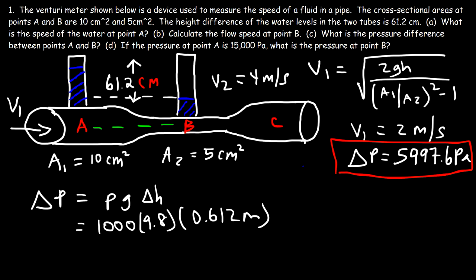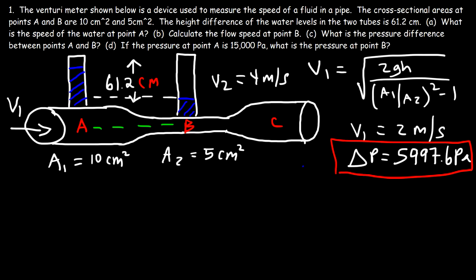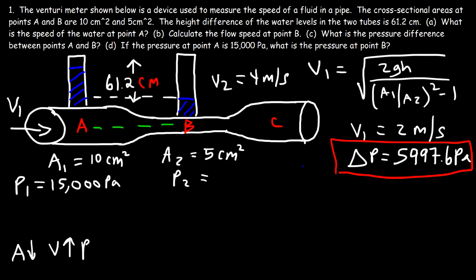Now let's move on to part D: if the pressure at point A is 15,000 pascals, what is the pressure at point B? Whenever the area decreases, the flow speed increases, and when speed increases, pressure decreases. The pressure is high when speed is low and low when speed is high, so we expect an answer less than 15,000 pascals. We already have the change in pressure, so P2 = 15,000 - 5,997.6 = 9,002.4 pascals.